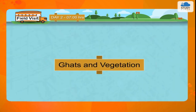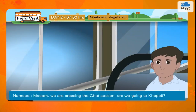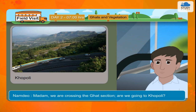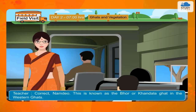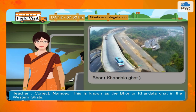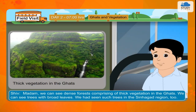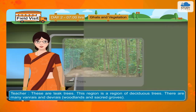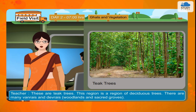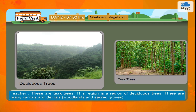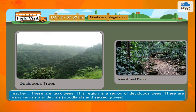Ghats and Vegetation. Namdev: Madam, we are crossing the Ghats section. Are we going to Khopoli? Teacher: Correct Namdev. This is known as the Bhor or Khandala Ghats in the Western Ghats. Shiv: Madam, we can see dense forests comprising of thick vegetation in the Ghats. We can see trees with broad leaves. We have seen such trees in the Sinagad region too. Teacher: These are teak trees. This region is a region of deciduous trees. There are many Vanrai's and Devrai's — woodlands and sacred groves.